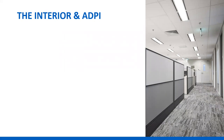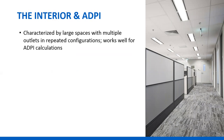Another thing different about the interior zone: it's typically characterized by multiple diffusers in repeated configurations that lend themselves to the use of the Air Diffusion Performance Index, or ADPI. ADPI can be measured in a laboratory and used to predict air motion and uniformity of temperatures within a space. We spent a lot of time talking about that in the last session.